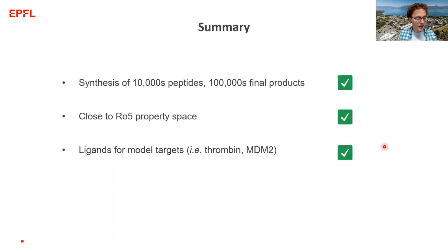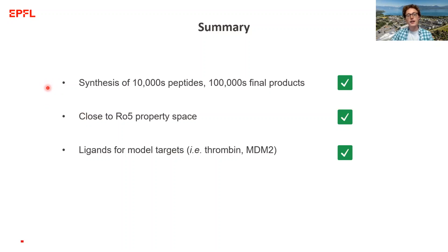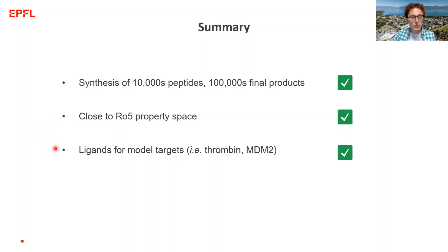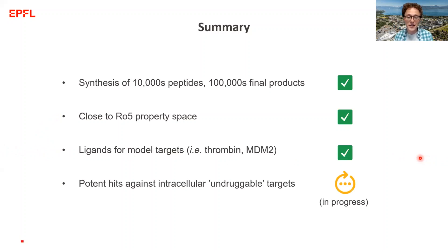A quick summary: over the last several years our lab has achieved very high-throughput synthesis of peptides and macrocycles. Because we have access to synthetic building blocks that give us higher diversity than natural amino acids, we can still make small peptides that are diverse and closer to rule-of-five property space. We've found ligands for model targets like thrombin and MDM2, and the most important role of our lab right now is finding potent compounds against so-called undruggable targets which are inside the cell.